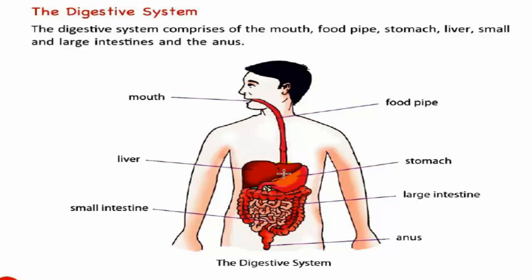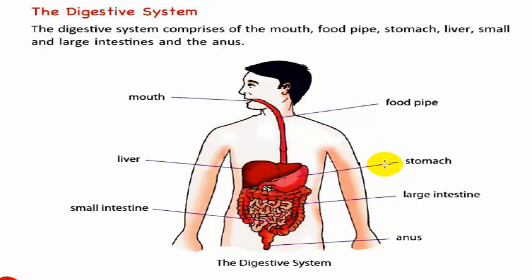Let's see in this figure. This is the mouth. This is the food pipe. This part is the liver. This is the stomach. This is the small intestine.